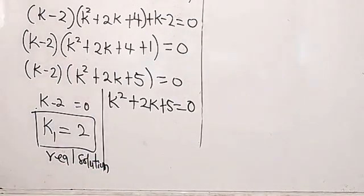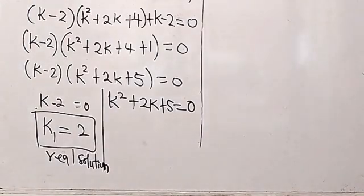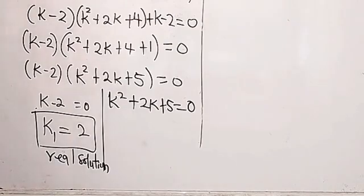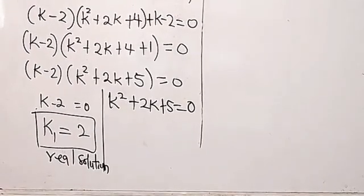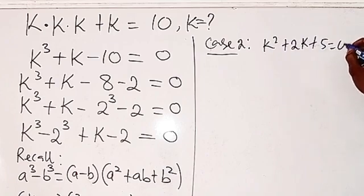Now from here, we cannot stop because k equals 2 is just one solution out of three possible solutions we are expecting. So we need to solve for the rest. For case 2, the second equation is k squared plus 2k plus 5 equals 0.